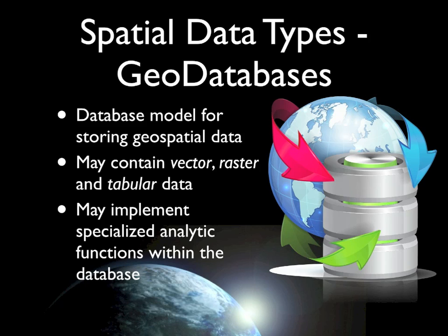Raster and vector data are not the only types of data you're likely to encounter. One we'll work with in coming weeks relates to geodatabases, or geospatially enabled databases. In addition to standard data types most databases support — dates, times, text content, numeric content — geospatially enabled databases extend that model to allow explicit support for storing, accessing, and processing geospatial data. Depending on the particular geodatabase, they may contain data types representing vector data, which is the most common data type found in geospatially enabled databases.